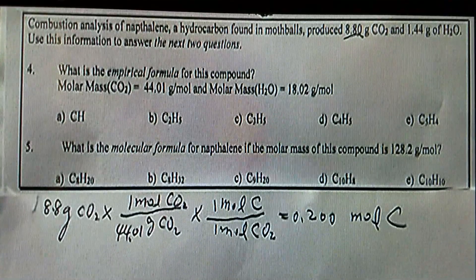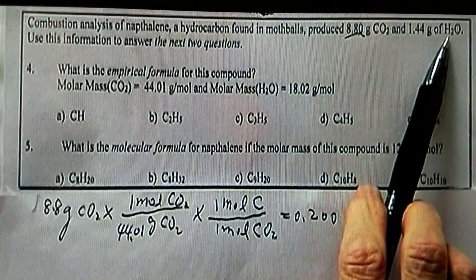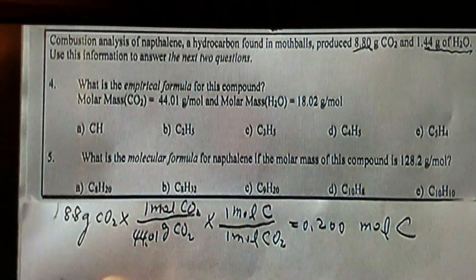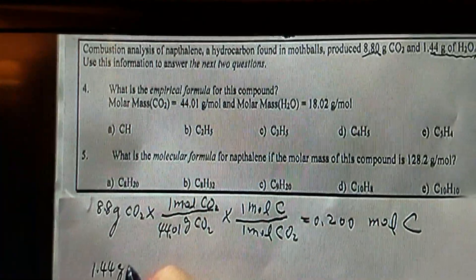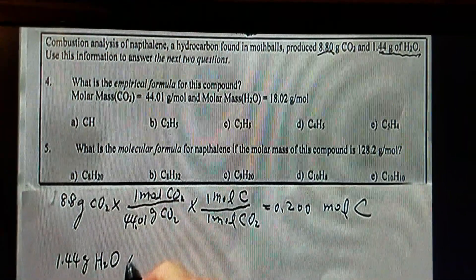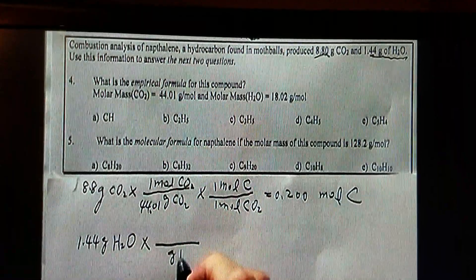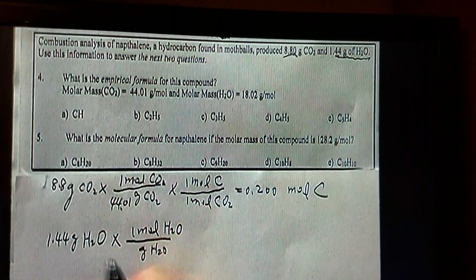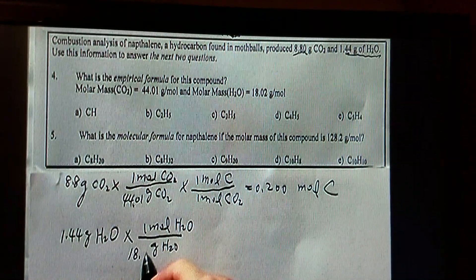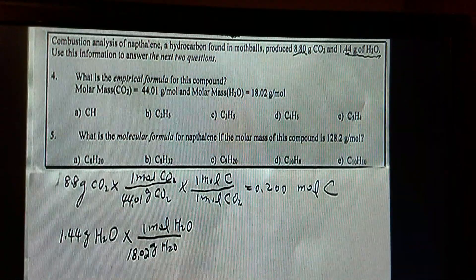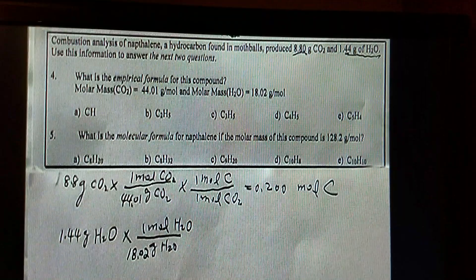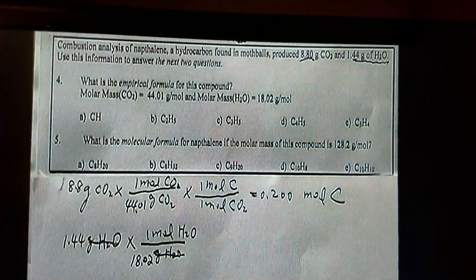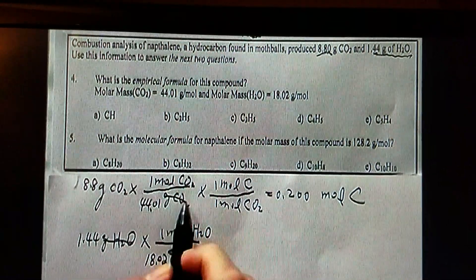We'll carry out similar calculations to find out the moles of hydrogen using the information given related with water, 1.44 grams. 1.44 grams of H2O, converting from grams of H2O to moles of H2O using the molar mass. Again, molar mass for water from periodic table, you should be able to obtain 18.02. Doing it this way, the grams of water can be cancelled, just like in the previous calculation.